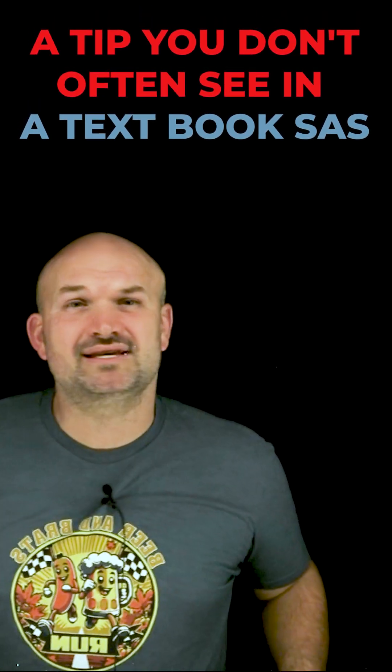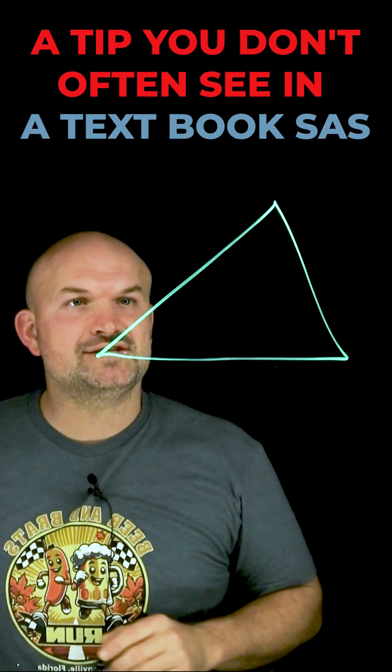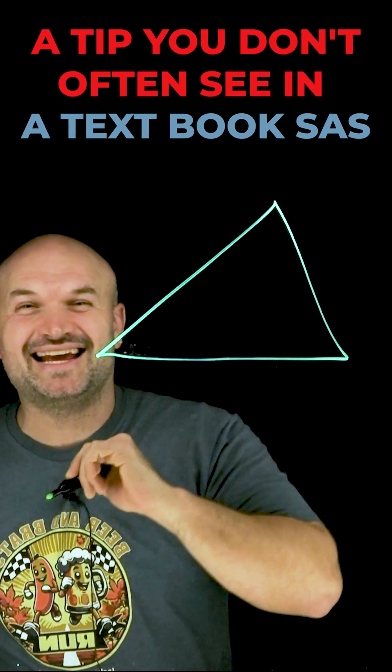Here's a tip on the law of cosines that you don't see a lot in textbooks. When you're given an oblique triangle, and in this case we're going to be given a side angle side.